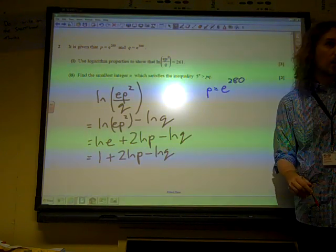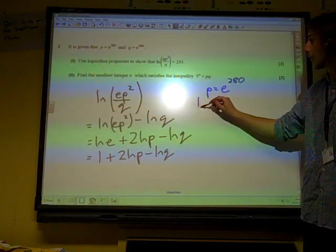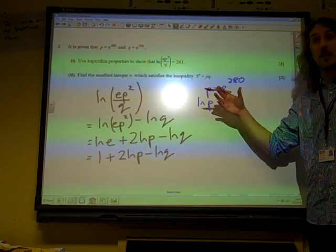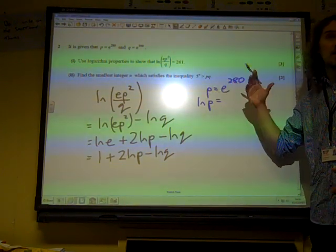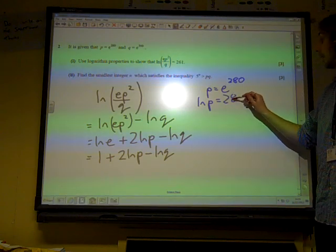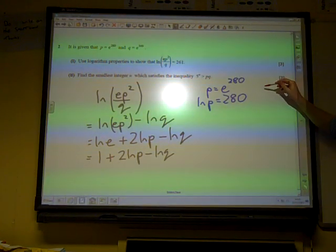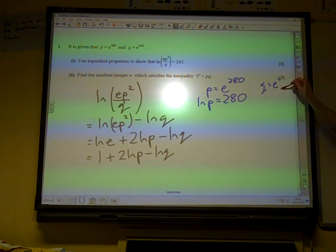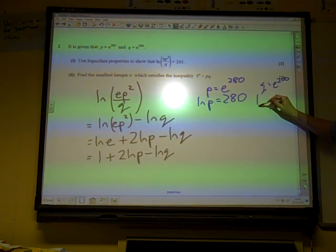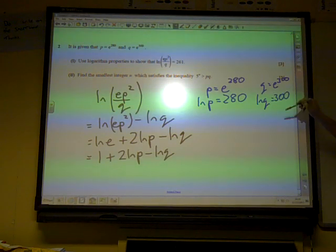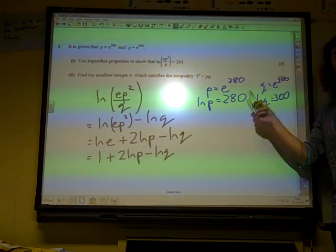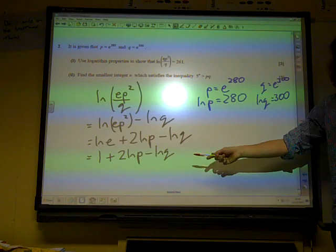We had that P was E to the 280. If I rearrange that equation, that means that natural log of P is the natural log of E to the 280. And of course, the natural log of E to the 280 is 280. So ln P is 280. And from the other statement, Q is E to the 300, so natural log of Q is equal to 300. Now I can substitute these values into my statement here.